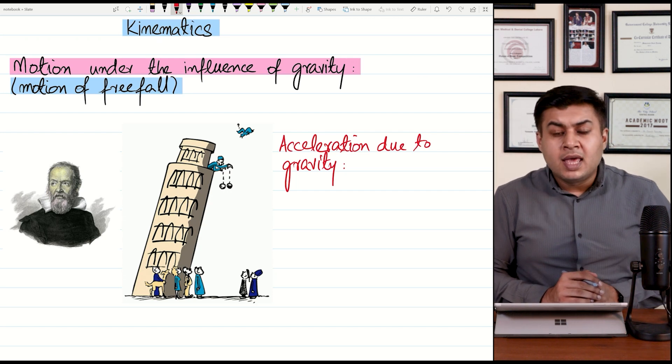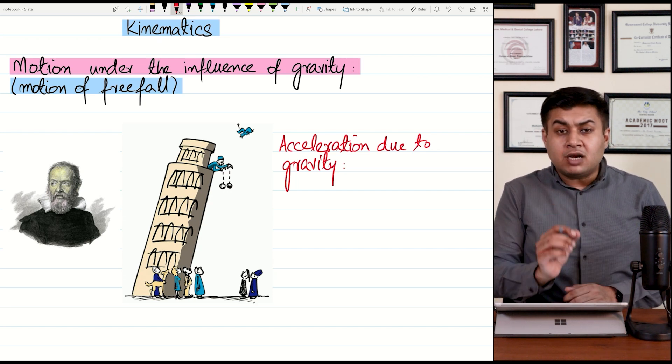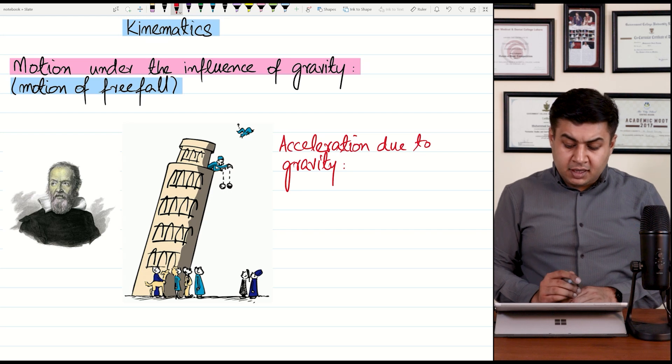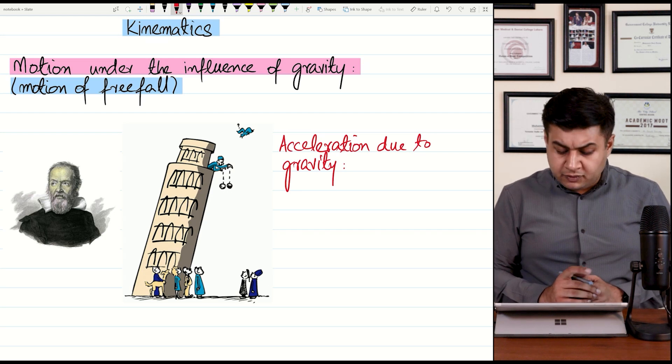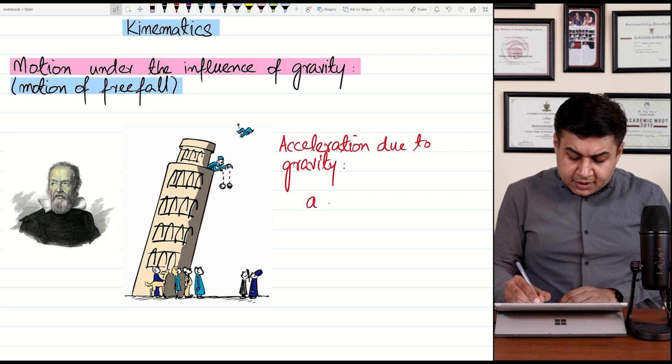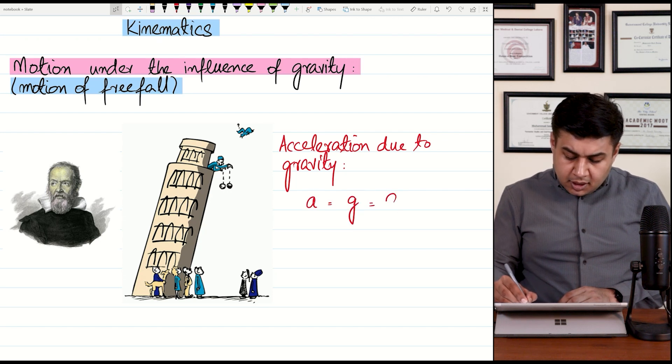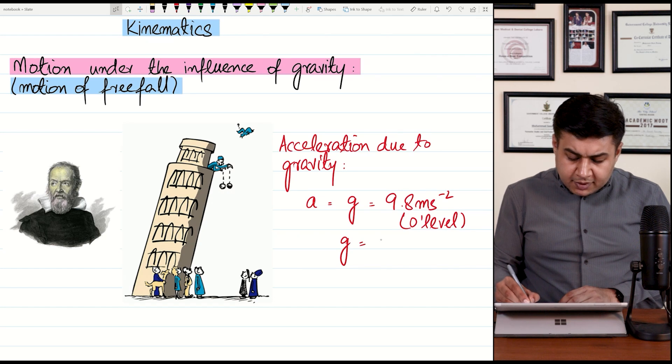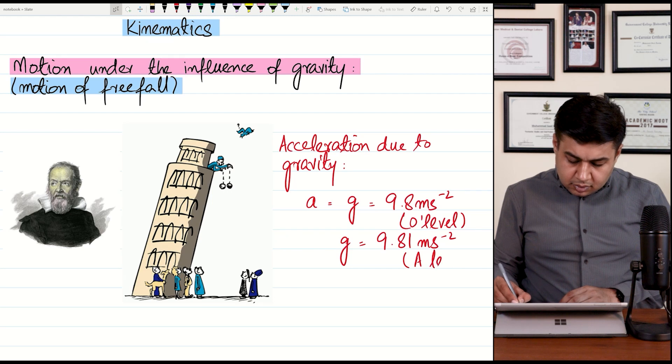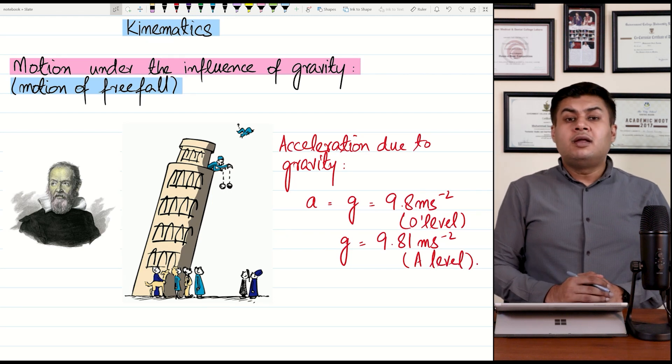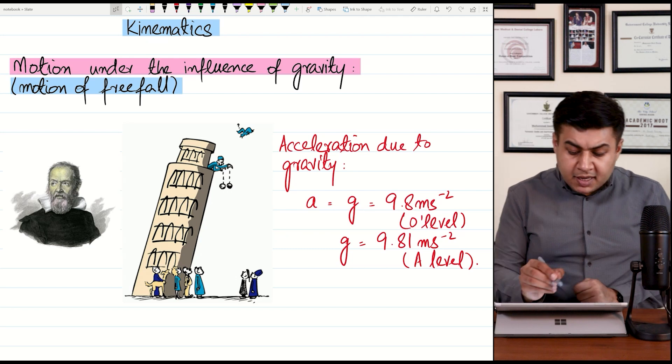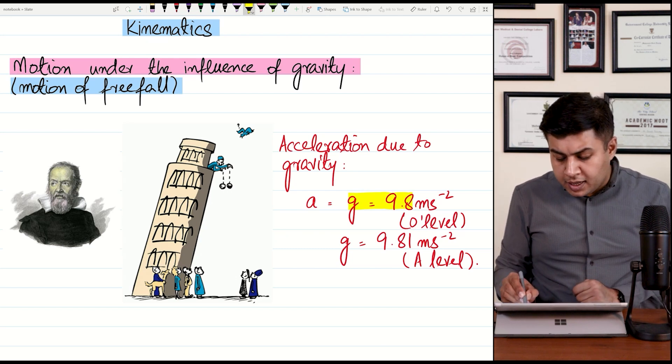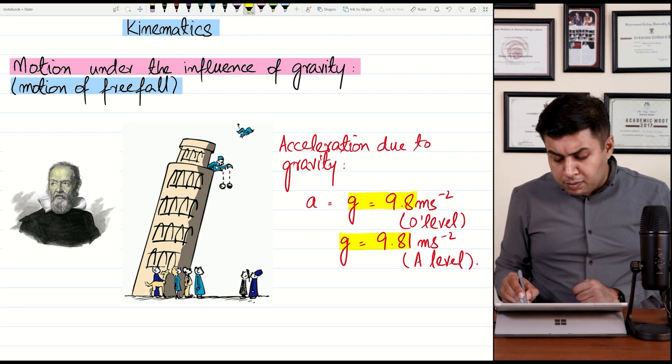Later, Newton has worked on the concepts and experiments were able to find out the exact value of acceleration due to gravity. That value slightly varies at different parts of Earth. But the average value of acceleration due to gravity is 9.8 meters per second square. You use this value in O levels. And in A level, you can use a little updated value which is 9.81 meters per second square. But gravity at the surface of Earth is approximately 9.8 or 9.81 meters per second square.